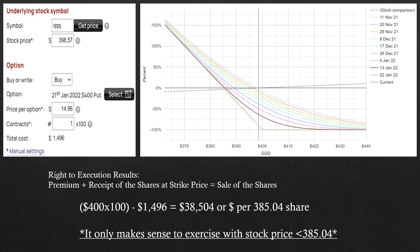To start out in the money we have to buy a $400 put contract, because the price is above $398. To start out in the money it costs us $1,496. In this case we're subtracting the premium in order to get our total price per share, so it only makes sense to exercise with a stock price of less than $385.04 if we're the buyer of the contract. It inverses the response — we want it to continue to get cheaper in order to execute.